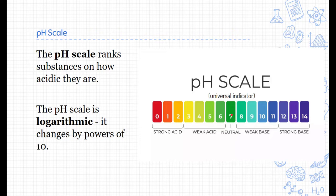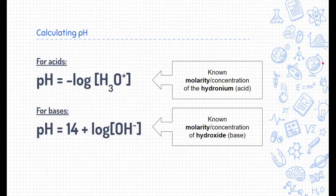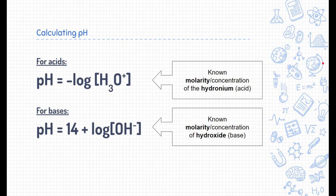Now, the pH scale is logarithmic, which means that every time we go from one number to the next, it changes by a power of 10. I'm telling you that because we need to know how to use the logarithmic function on our calculators in order to calculate pH.